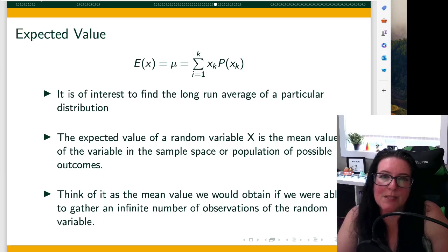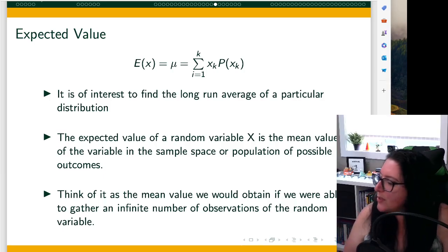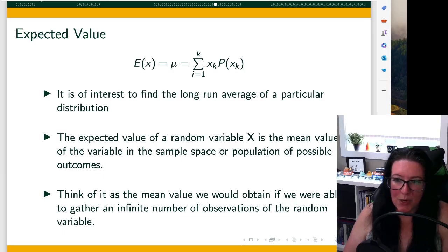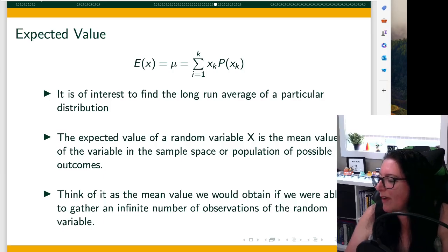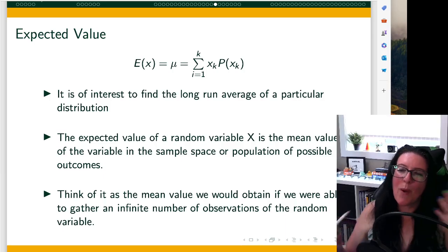The expected value is the long run average of a particular distribution. If we look at our average here, mu, the expectation of that population average comes from the fact that there is a probability of each different outcome, and it's like a weighted average.